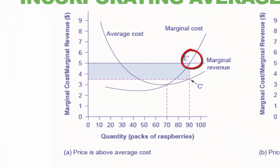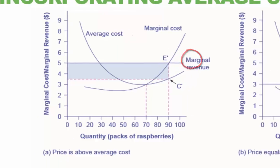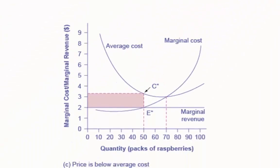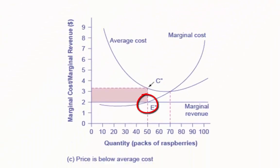In the top left graph A, price intersects marginal cost above the average cost curve. Since price is greater than average cost, the firm is making a profit. At the top right in graph B, price intersects marginal cost at the minimum point of the average cost curve. Since price is equal to average cost, the firm is breaking even. At the bottom in graph C, price intersects marginal cost below the average cost curve. Since price is less than average cost, the firm is experiencing a loss.